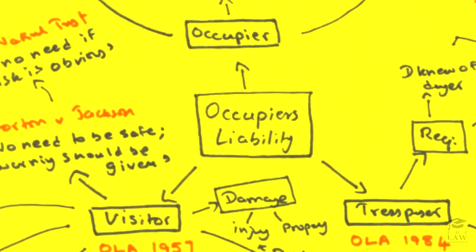In this lesson, we have a look at Occupier's Liability. As a topic, this connects heavily with nuisance and the principle of Rylands v Fletcher. In relation to nuisance and Rylands v Fletcher, both topics deal with liability posed on an owner of land in relation to acts or omissions done by them which affects the land of another.